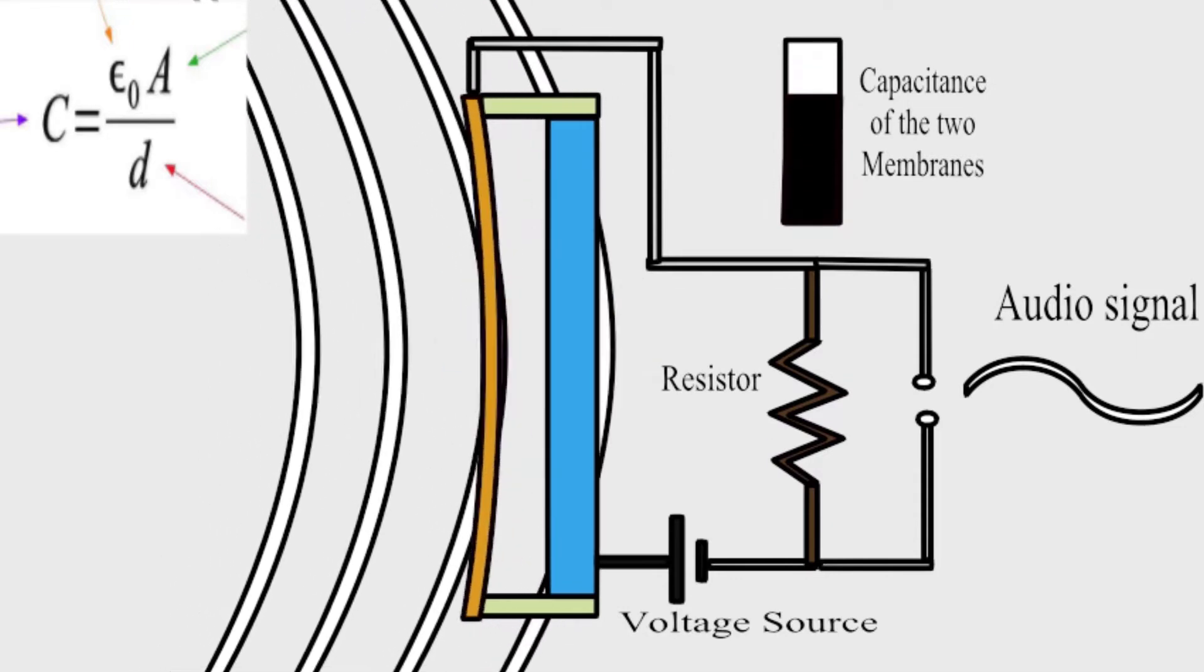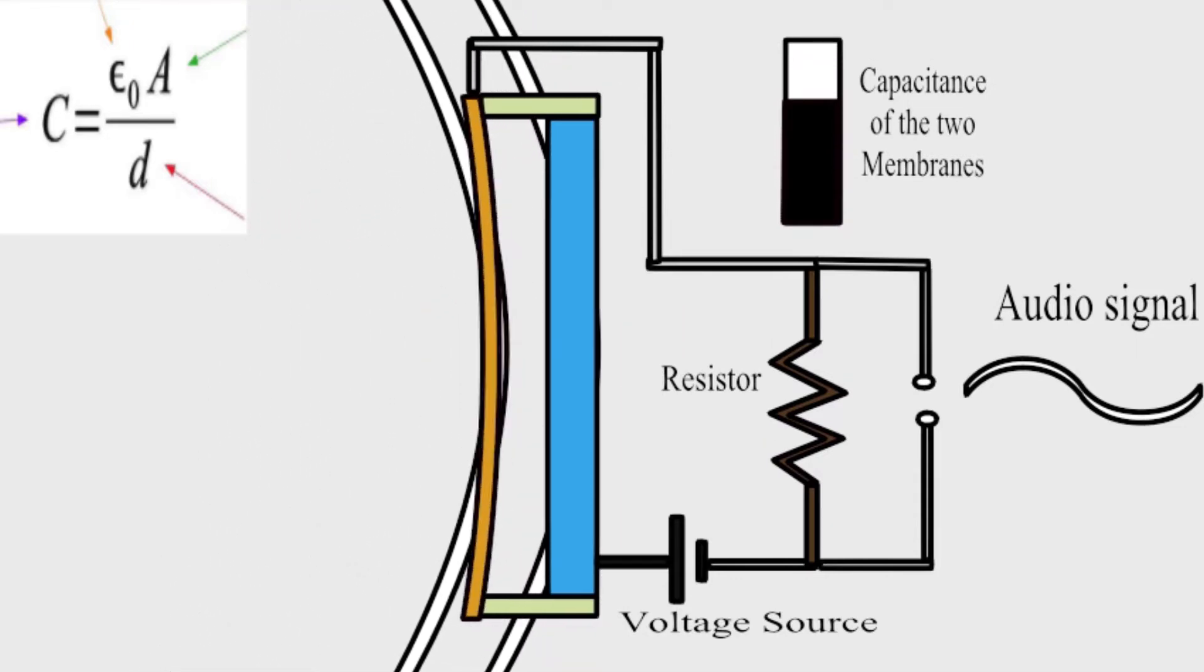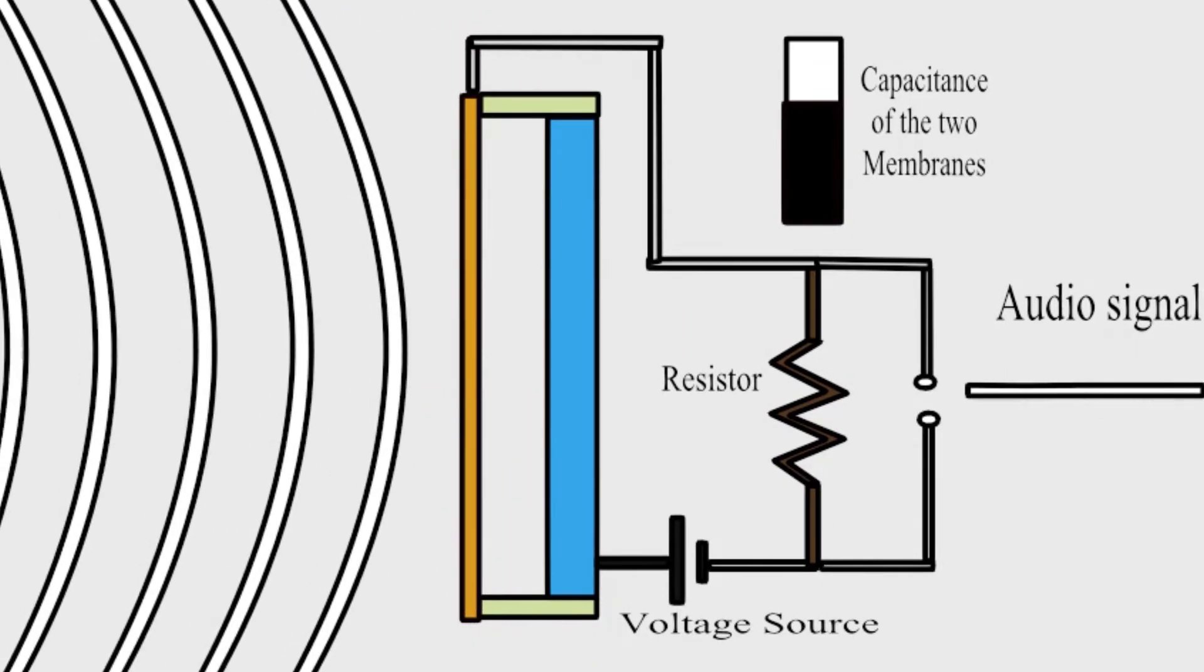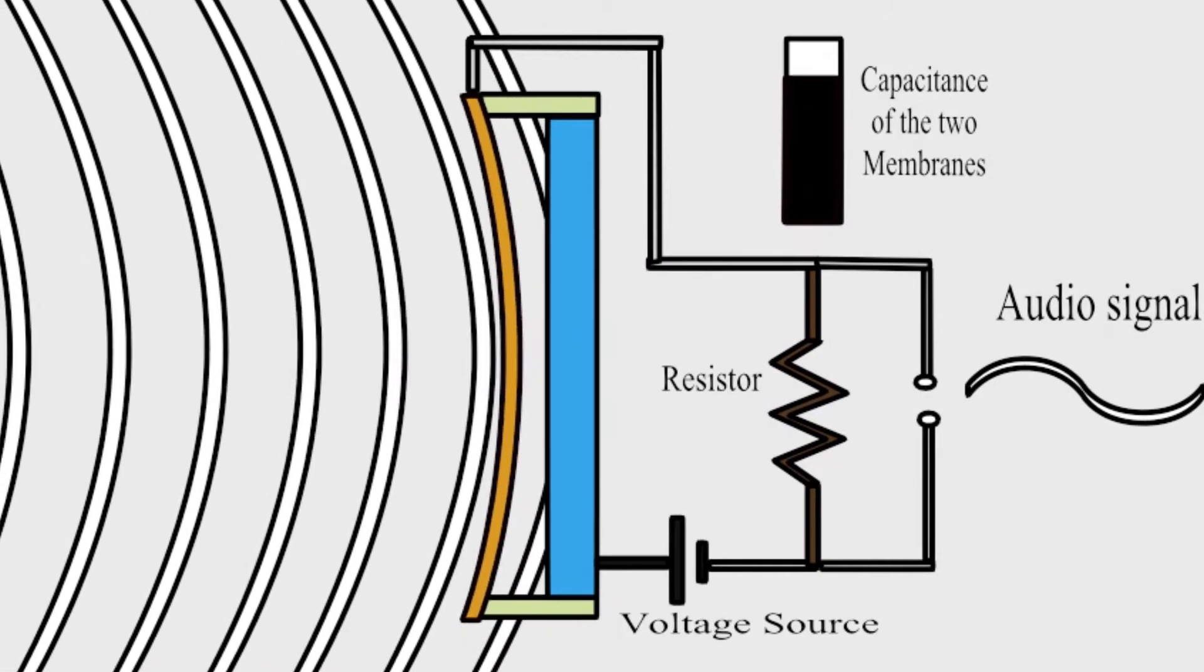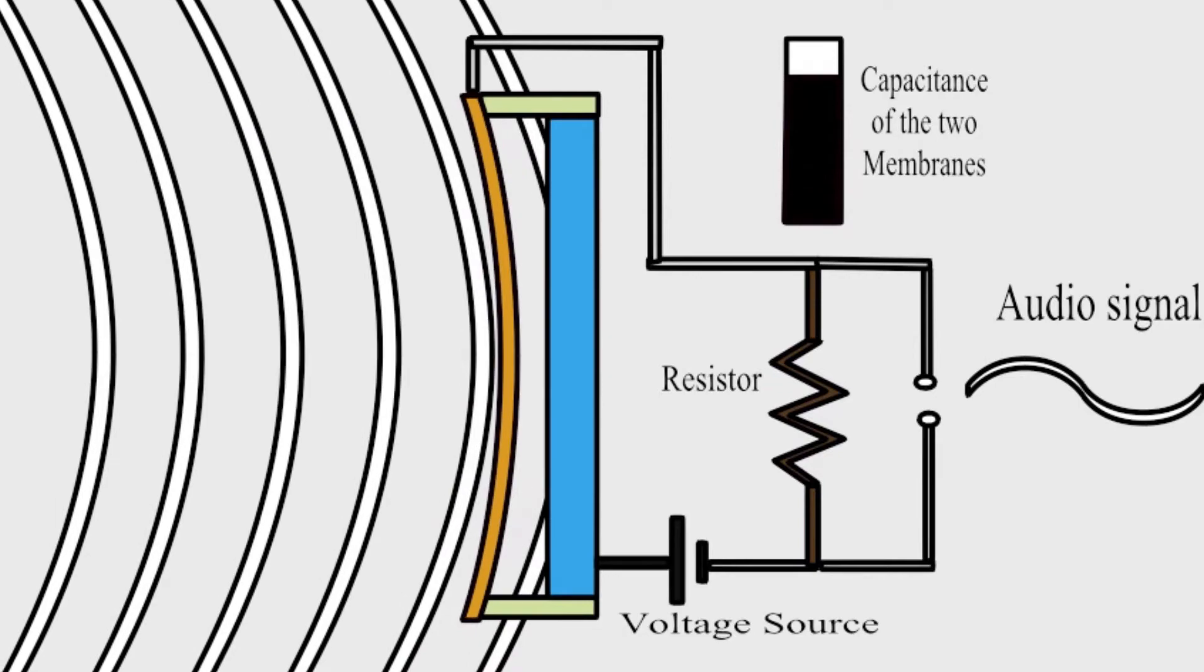And according to the equation of capacitance, the capacitance of the two metal plates also changes. And then the voltage across the resistor also changes because of the changes in capacitance of the two metal plates. And so, you get an audio signal at the output.